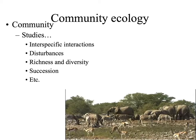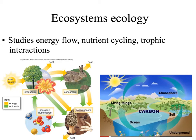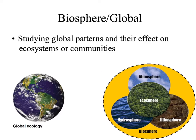Community ecology studies interspecific interactions, which are interactions between different populations. We can look at things like disturbances, richness and density, and succession of our community. Ecosystems study energy flow, nutrient cycling, and trophic interactions, taking into account abiotic factors such as nutrients or energy flow, as well as interactions with the living organisms. The biosphere refers to our entire globe; we will see global patterns and their effect on the lower levels of ecology, such as ecosystems and communities.